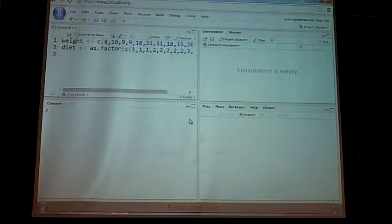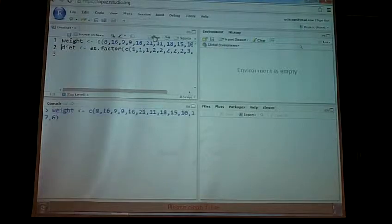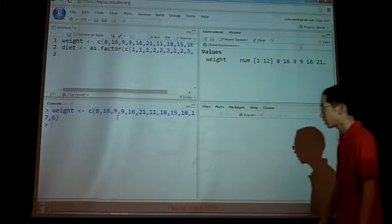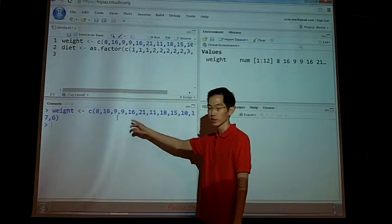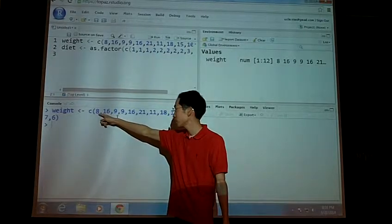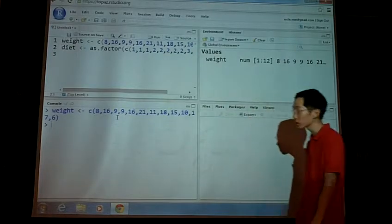If you have a small data set, you can just do it manually, as I have done here. One will create a vector of all of your numeric values. So, this is the sheep weight gain thing, and so I just said 18, 8, 16, 9, 9, 16, these are all the weights.